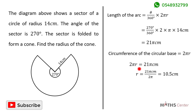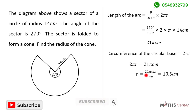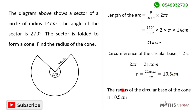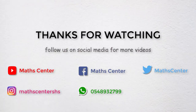To get r, I'll divide the left hand side by 2 pi and divide the right hand side by 2 pi. This will give us 21 pi centimeters divided by 2 pi, and this will give us 10.5 centimeters. So the radius of the circular base of the cone, or the radius of the cone, is 10.5 centimeters.